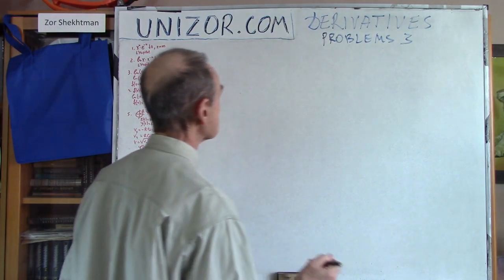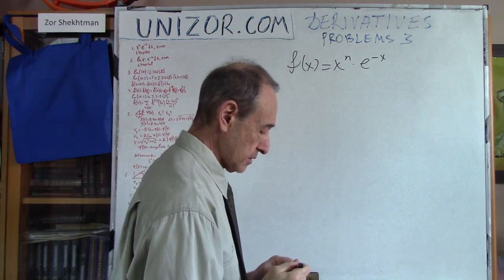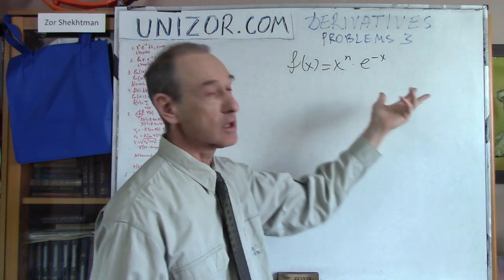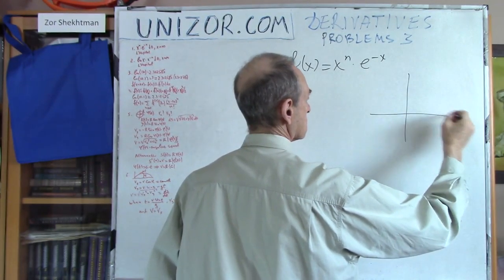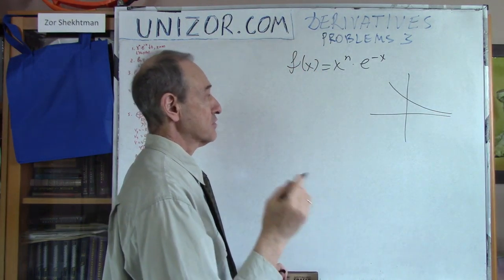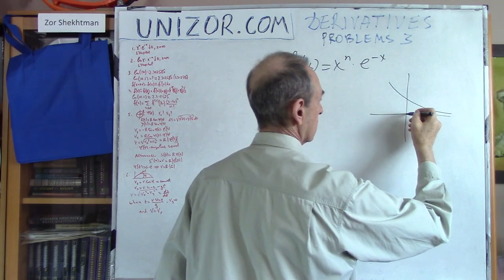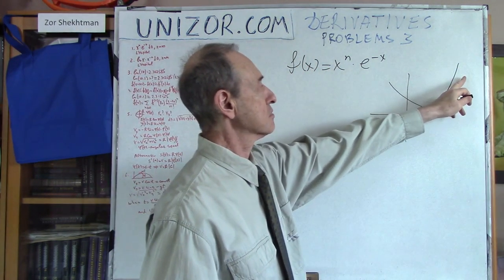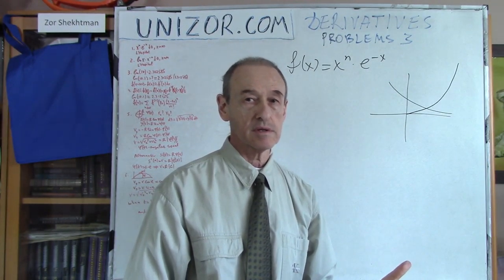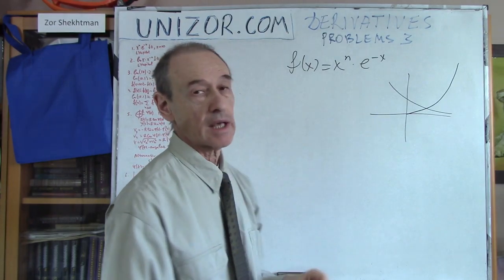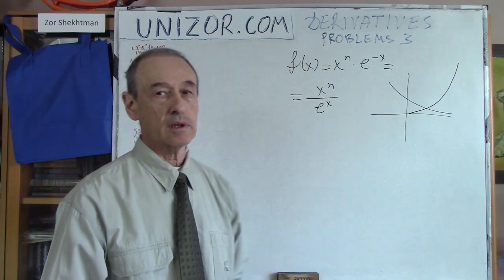Problem number one: consider this function. My statement is about the behavior of this function when x goes to infinity. e to the power of minus x goes to zero much faster than x to the power of n, which grows to infinity. Looking at their product, it's not obvious where it would go. Let's rewrite it and use L'Hôpital's rule.